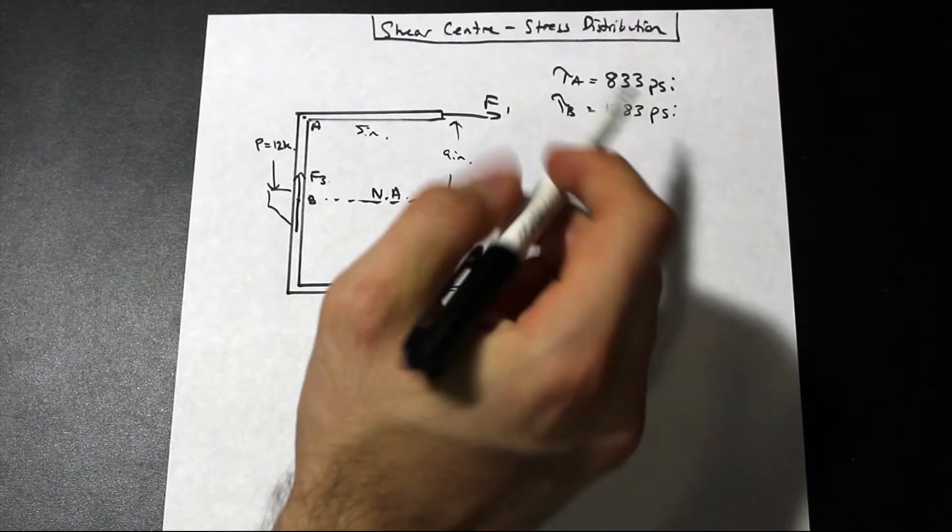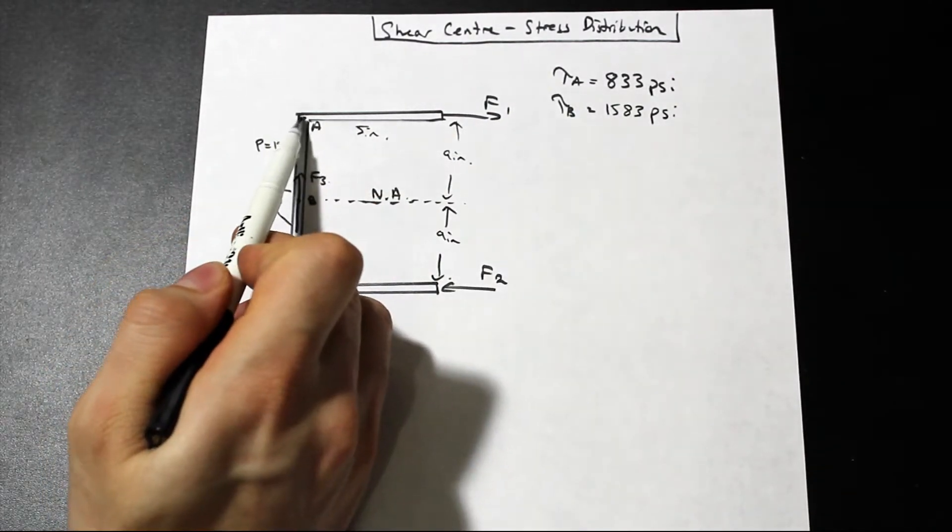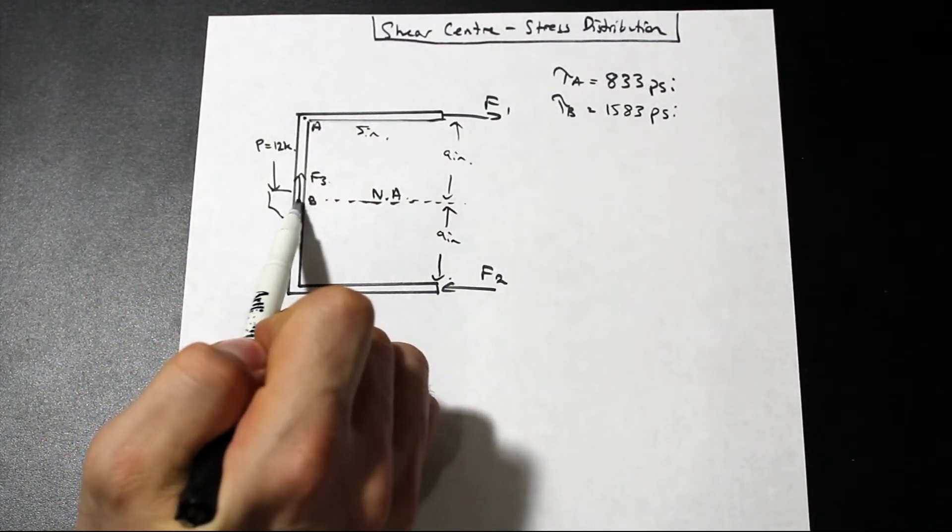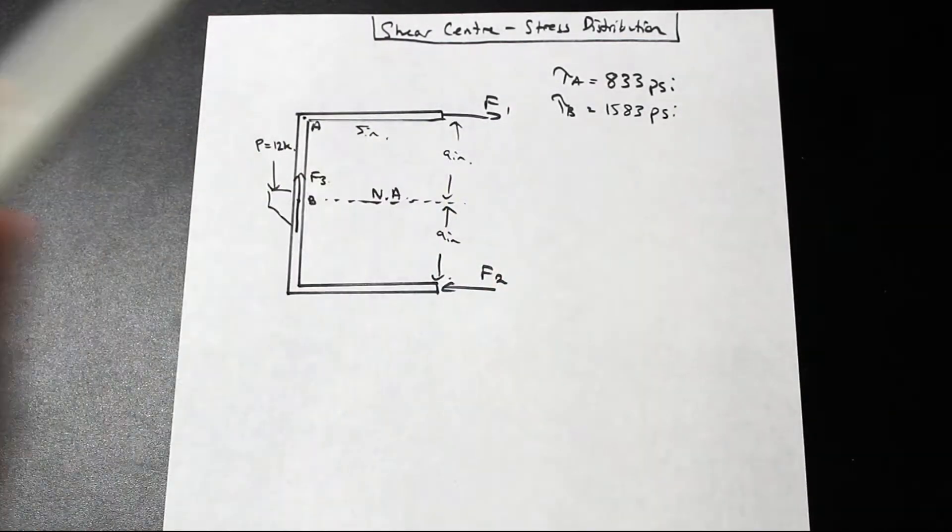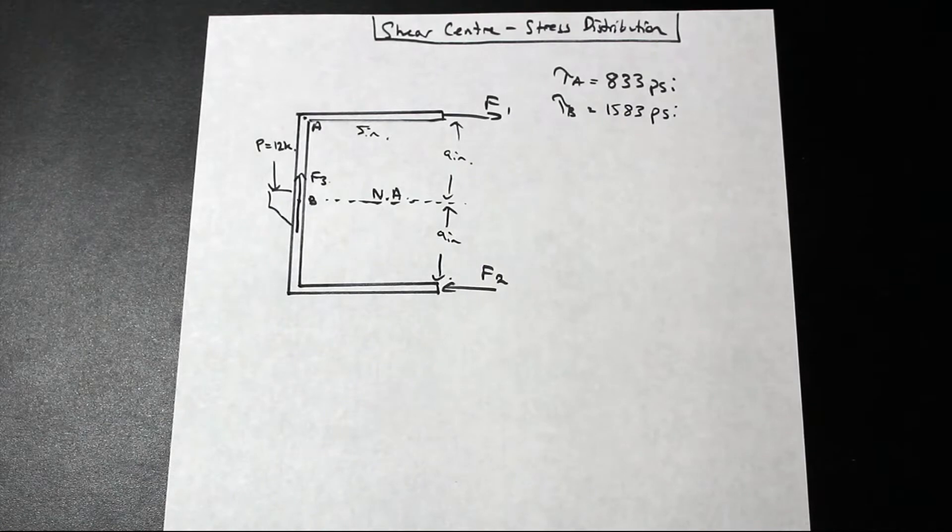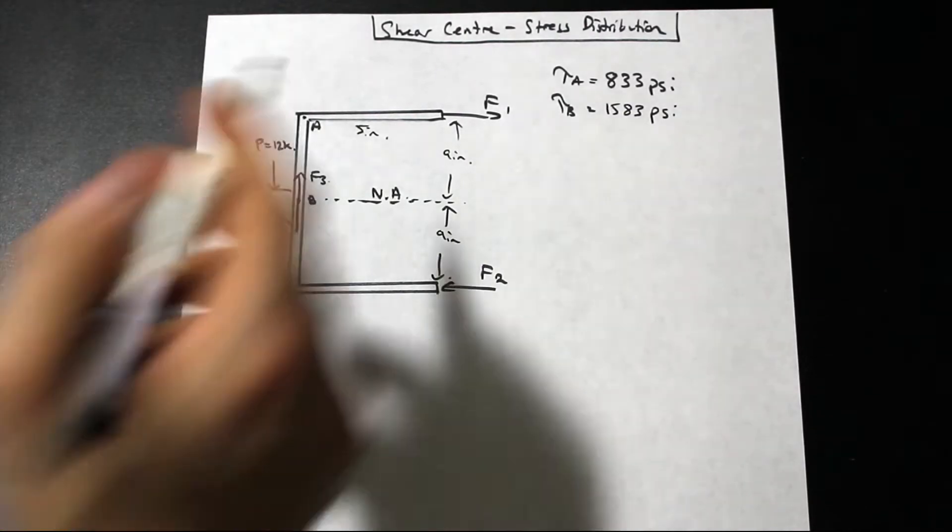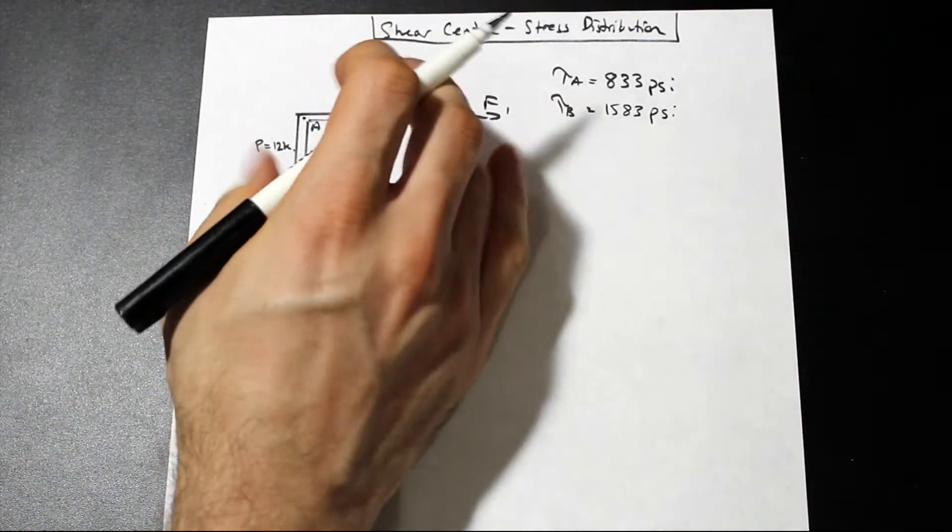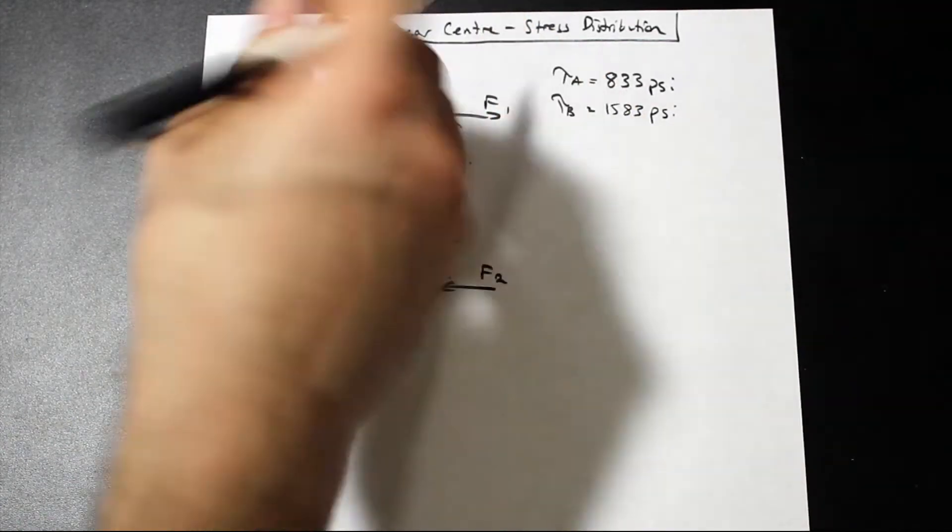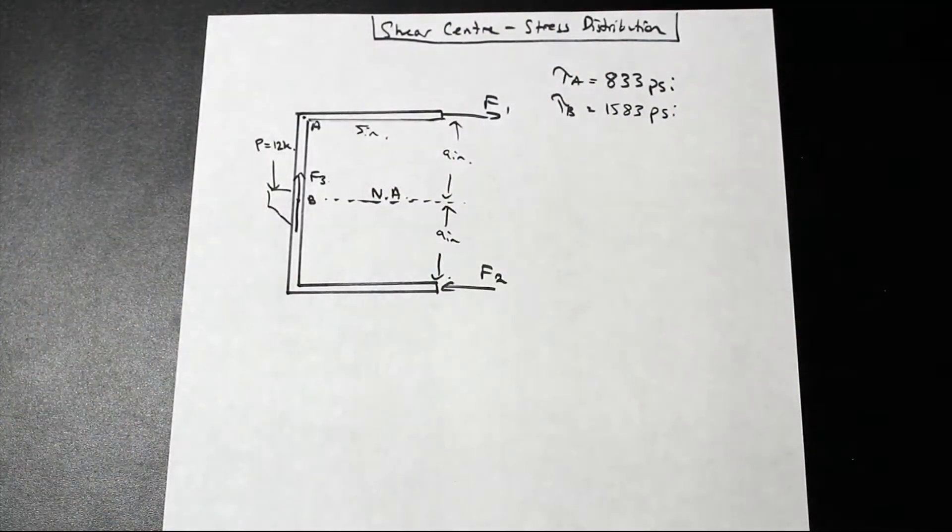Okay, so what we have is we have tau A, the shearing stress at point A, and we have the shearing stress, the maximum shearing stress at point B. Okay, so that's what we found. If you're not sure how we did that, go back to the other question. There's a step-by-step process for that. Okay, and we have a force of 12 kip here causing a rotation, and we have F1 and F2 balancing that rotation.